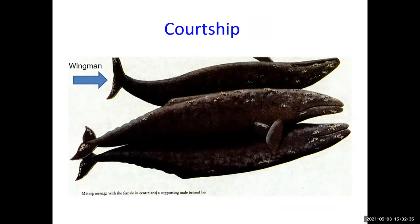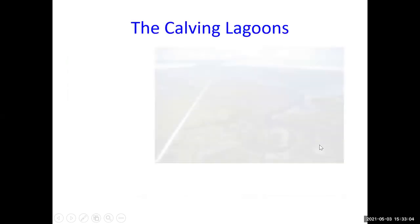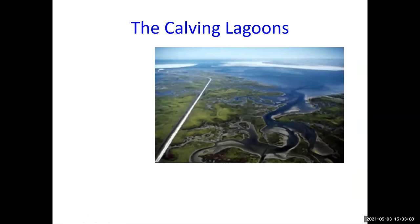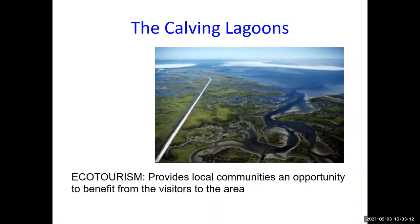During courtship, a male will push the female so that two whales can come together to mate in the water. The calving lagoon in Baja California is an important site — an aerial picture shows the lagoon. This is important for local communities because it provides eco-tourism opportunities, with local boats bringing visitors out to view what's going on. It's important from an economic point of view as well.